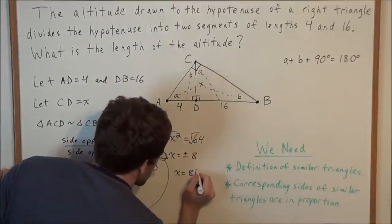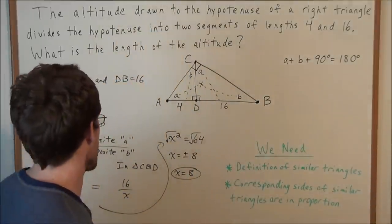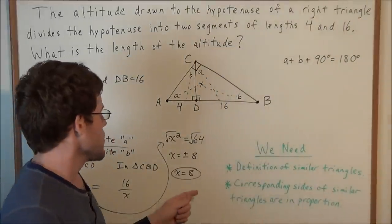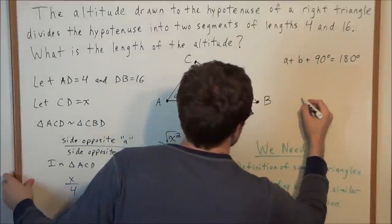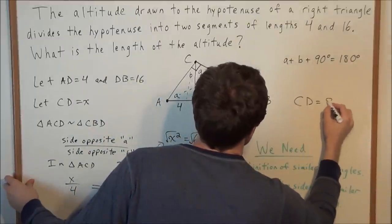So that tells us that our only solution is going to be x equals 8. So our final answer, what is the length of the altitude? We have that, we'll even write over here, CD, the altitude is equal to 8.